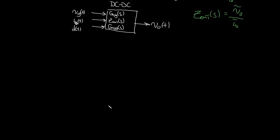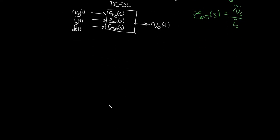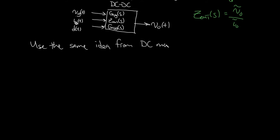How do we do this? We can do it in a very straightforward way — using the same idea as in DC modeling, which was to use IVSB and CCB to generate equations, and then from those equations generate circuits, which we put together to make a DC circuit model.